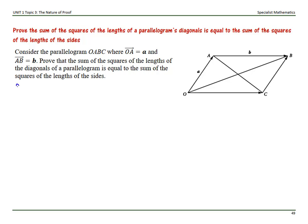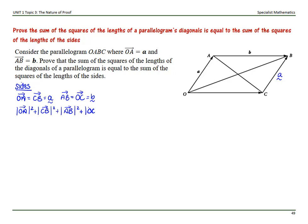Let's start with the sides. Since we know it's a parallelogram, vector OA equals vector CB, which is a, and vector AB equals vector OC, which is b. So the sum of the squares of the lengths of the sides is: the magnitude of OA squared, plus the magnitude of CB squared, plus the magnitude of AB squared, plus the magnitude of OC squared.